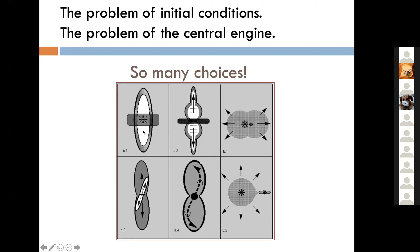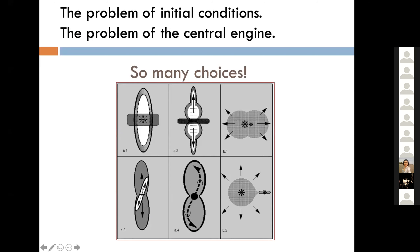In the upper left here we have the standard — what we used to call the general interacting stellar wind model — where you've got a toroidal density distribution and a fast wind blowing into it. Here we've got a version of that where you've got magnetized winds and the magnetization of the wind changes considerably.